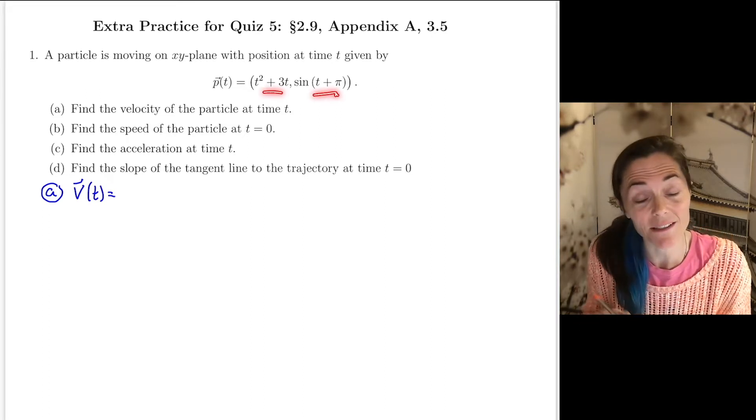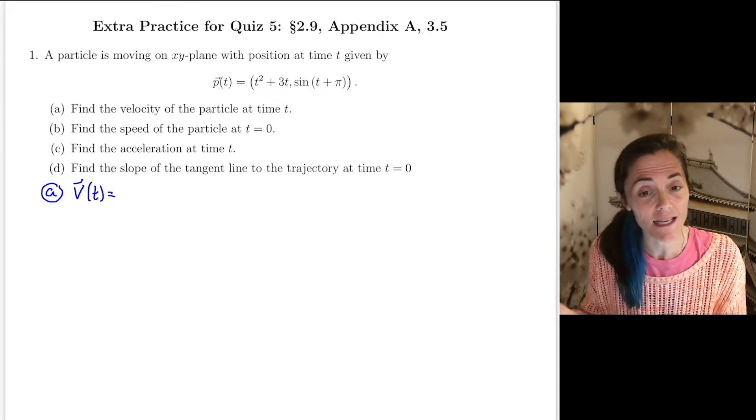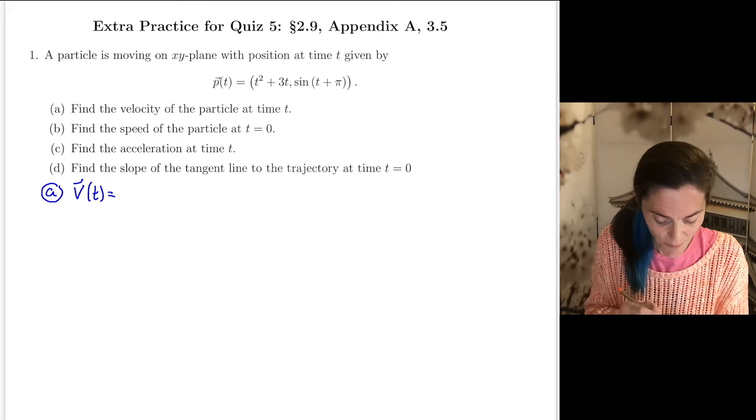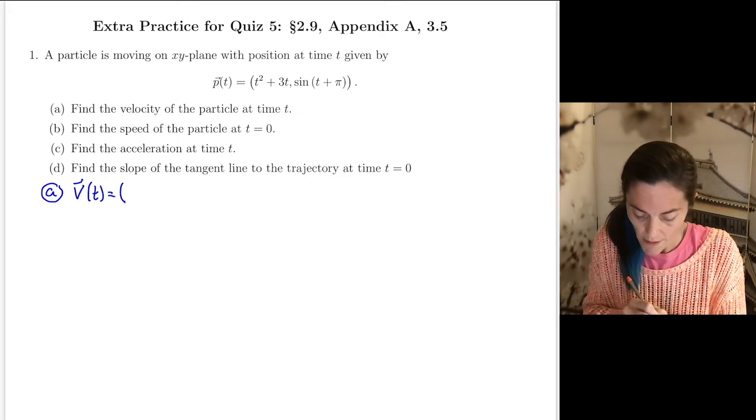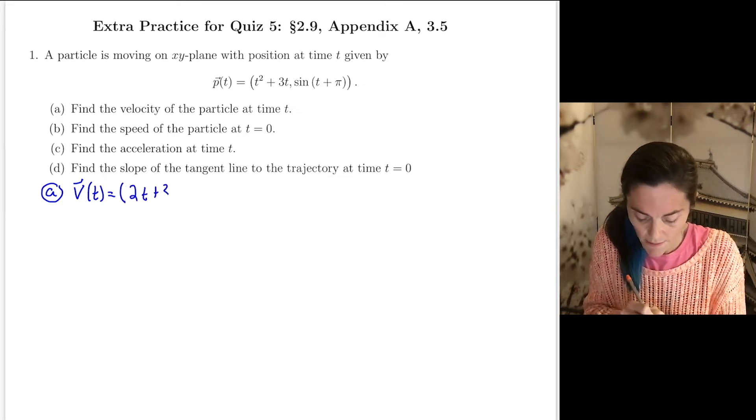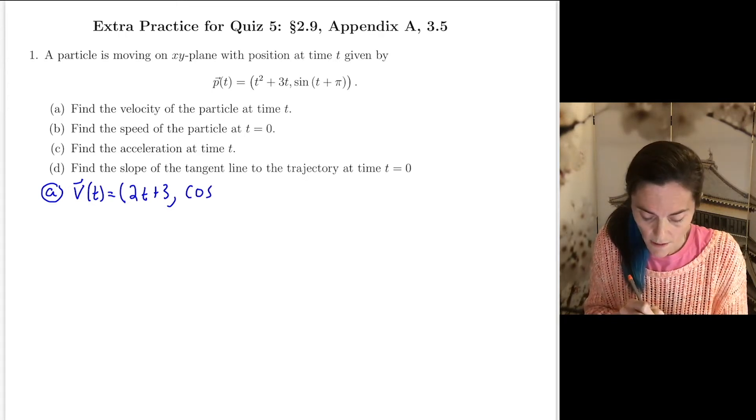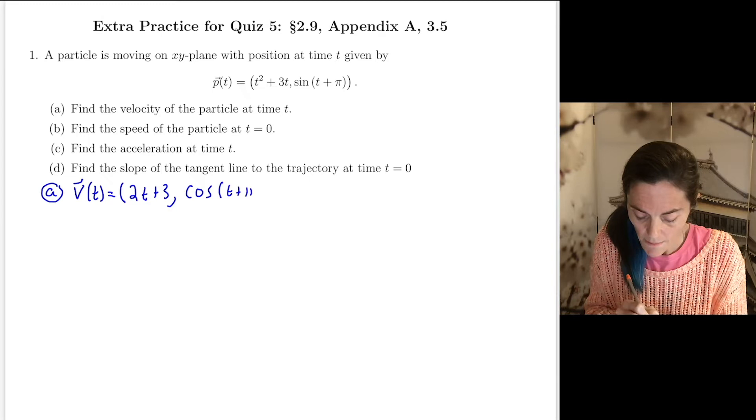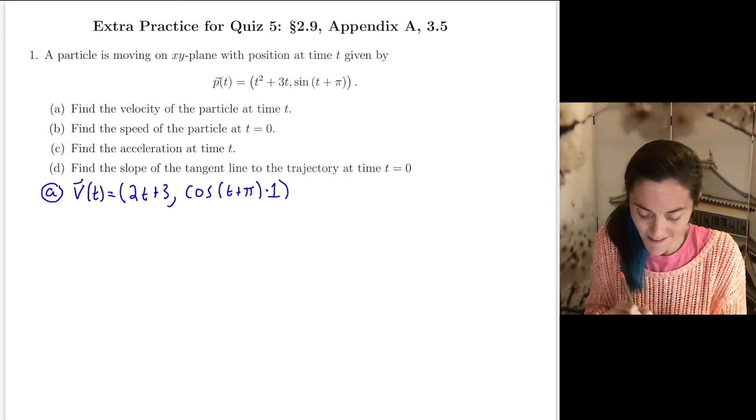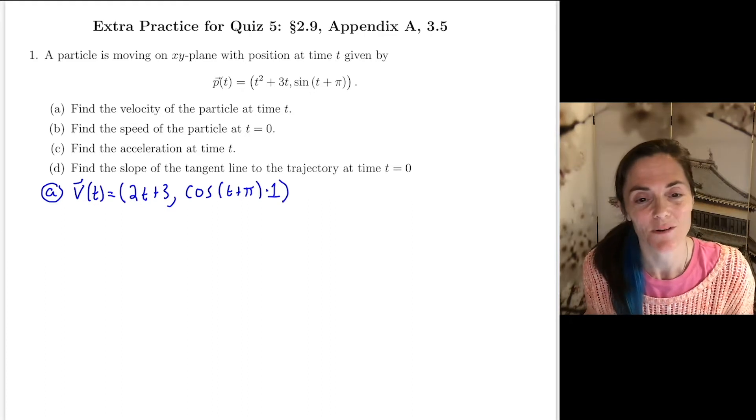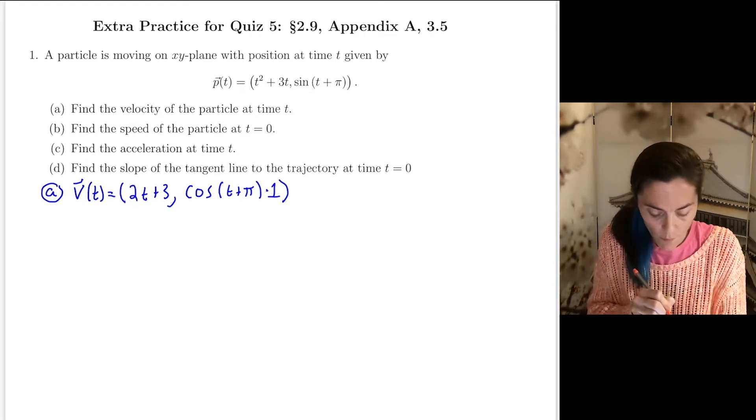We have multiple parts. The first part, we want to find the velocity at time t. The nice thing is, this is in R2. You see two components. This is a vector. The way we calculate the velocity is we just differentiate each component.